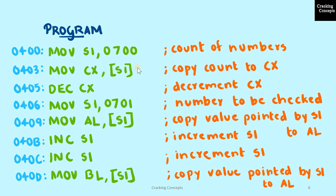Now we look into the program. Initially, the source index register is pointed to the first location of memory where we have stored the count of numbers, which is 5 — this is a 3-byte instruction. In the next instruction, the value pointed by SI is copied to the CX register — a 2-byte instruction. Next, we decrement CX by 1 so 5 becomes 4 — a 1-byte instruction. Then we point SI to location 0701 where the number to be searched for is stored — a 3-byte instruction. Next, we copy the value pointed by SI to AL — a 2-byte instruction.